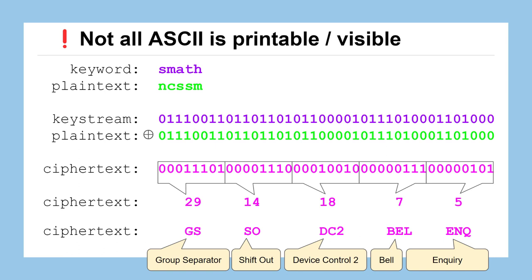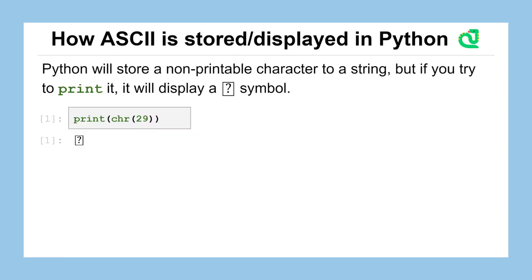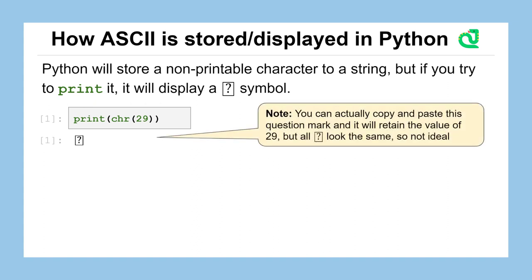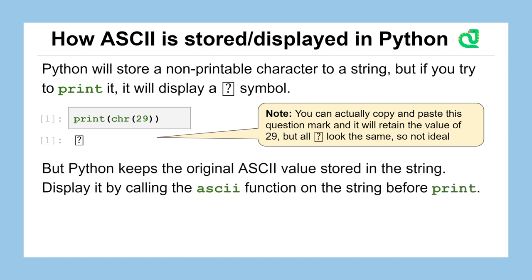Let's look at what happens in Python with these non-printable characters. If we use the chr() function to turn the number 29 into an ASCII character, we get a question mark on screen because it has no printable symbol. One note: if you copy and paste that output, that question mark retains a value of 29 and ord() would return 29. But having a collection of indistinguishable question marks is not an ideal way to manage non-printable characters. Python can handle this better using escape characters — those backslash sequences you may have seen in strings.